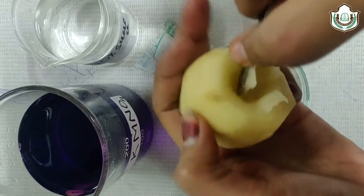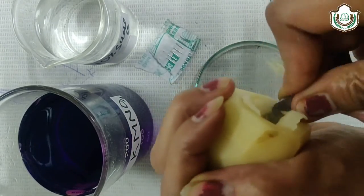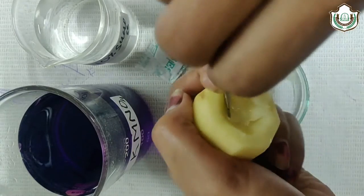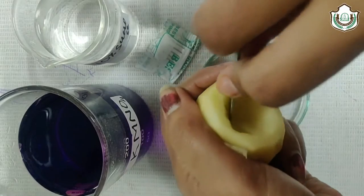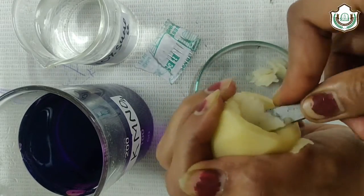With the help of scalpel, you have to make the thin wall of the potato so it can behave as a semipermeable membrane.